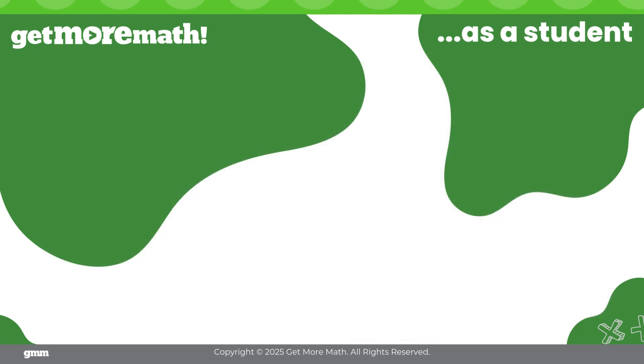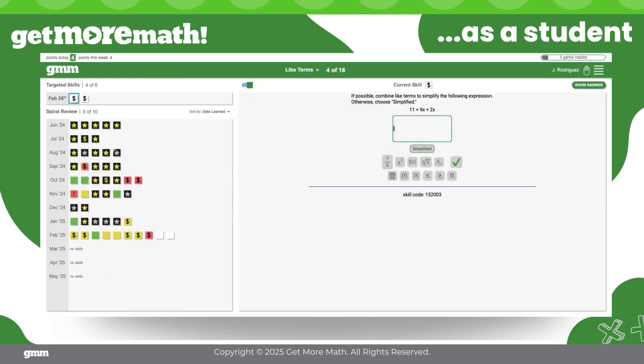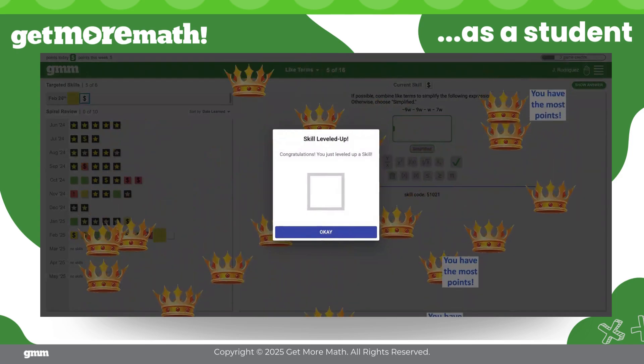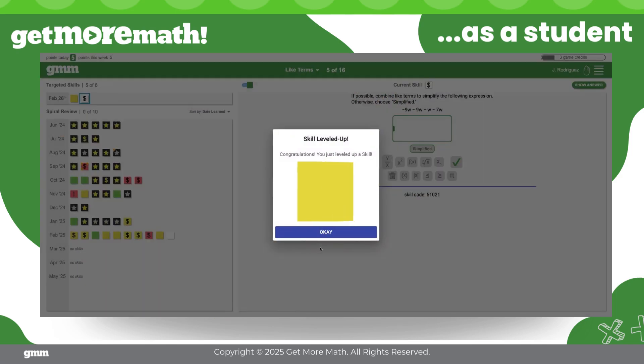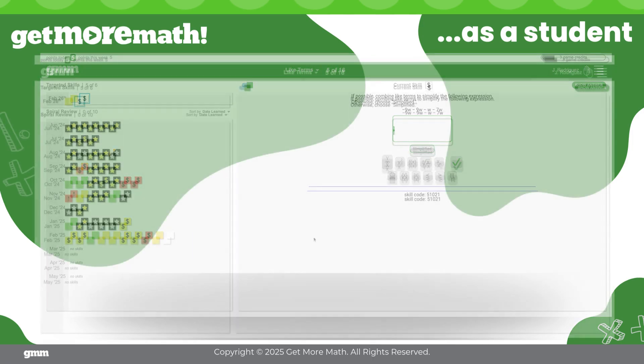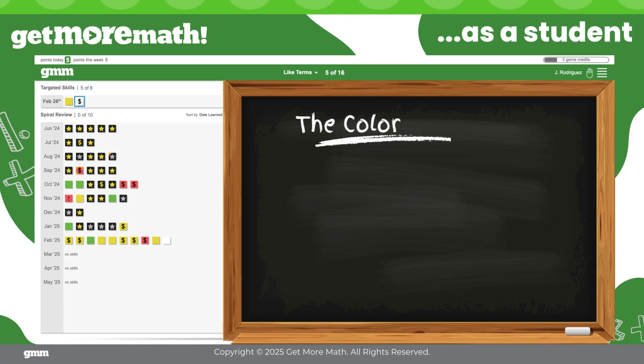As students work through the assignment, both they and their teacher receive immediate feedback on progress. Once our student answers a question correctly on the first try, at least three times, they will see the skill level up to a yellow rating. Let's take a moment and explore what each color signifies in Get More Math.